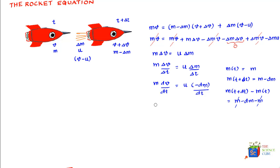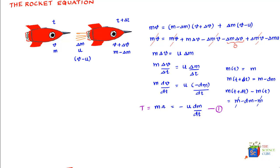This simplifies into m times a — because dv/dt is the acceleration of the rocket — equals minus u times dm/dt. So this is our first rocket equation, which says that mass times acceleration of the rocket, which we can call thrust, is equal to minus the relative velocity of the exhaust gases times the rate of change of mass of the rocket.